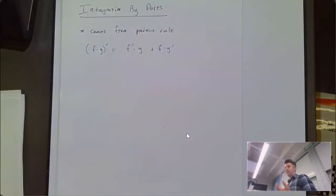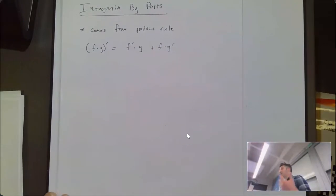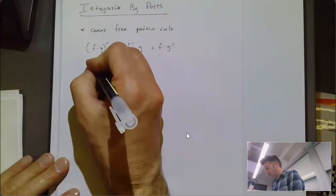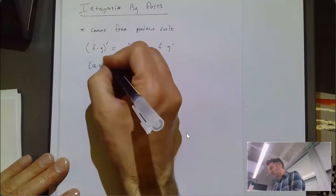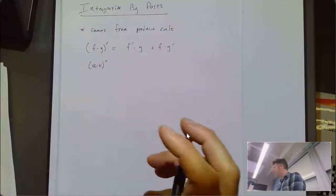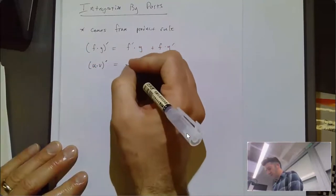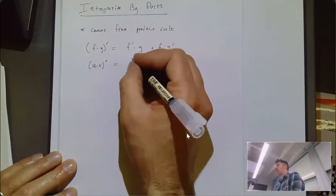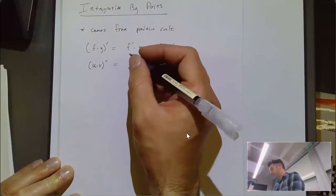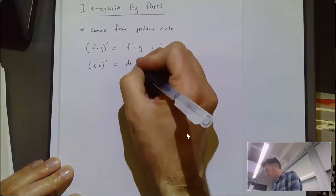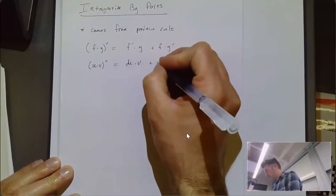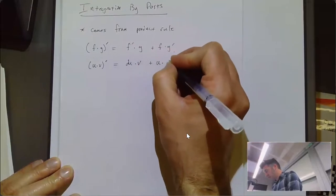We're going to write this slightly differently to make it look more like integration by parts. Instead of f and g, let's write it as u and v. And if we take the derivative, instead of writing u prime, I'm going to write du. So it's the derivative of u times v plus u times the derivative of v.